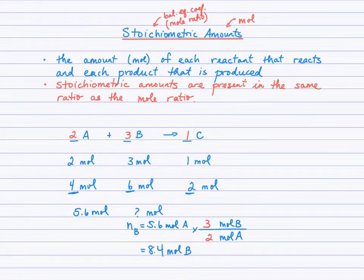So 5.6 moles of A will react. You'll need all of 8.4 moles of B. And then if you needed to do the stoichiometric amount of the product here, so how many moles are produced here? Well, again,